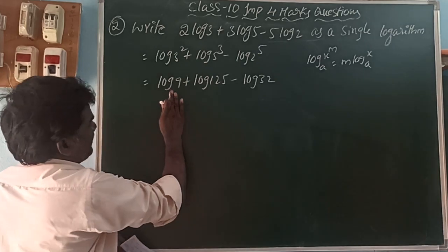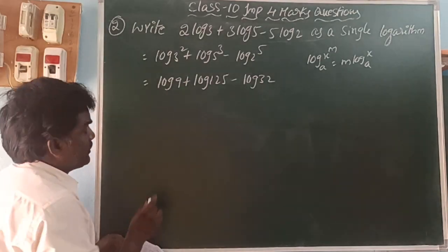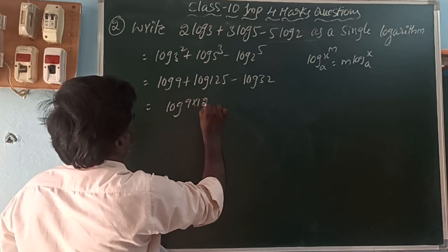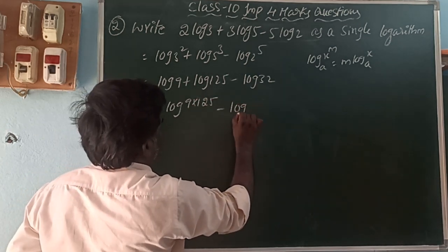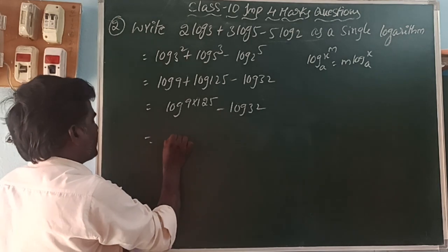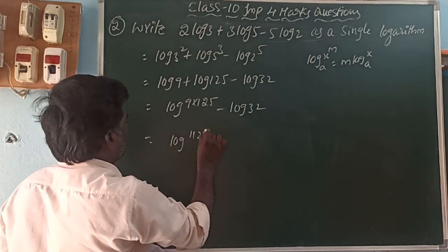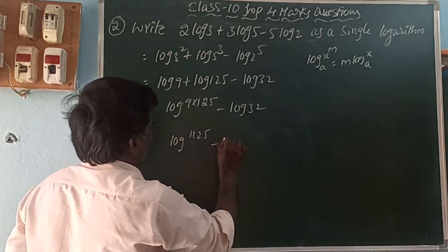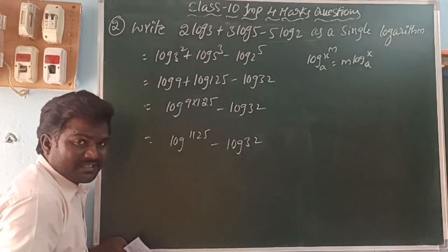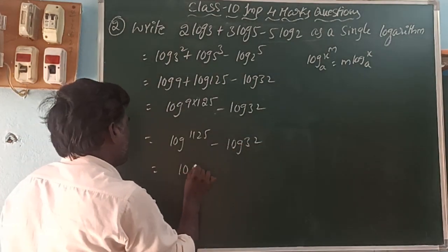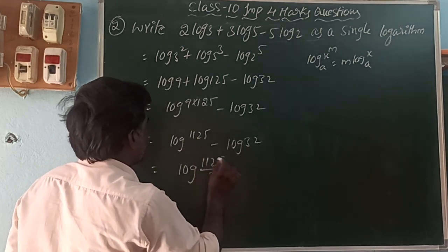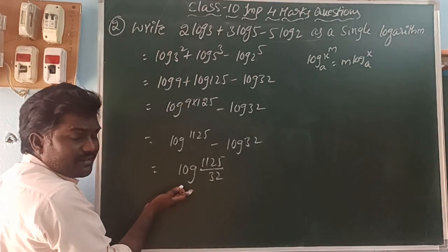Using log x + log y = log(x·y), we get log(9 × 125) minus log32. Nine times 125 is 1125. So this becomes log(1125) minus log(32), which equals log(1125/32) as a single logarithm.